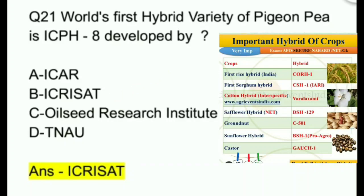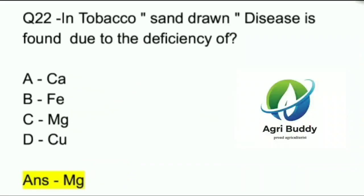Question 22. In tobacco, sandron disease is found due to deficiency of? A. Calcium. B. Iron. C. Magnesium. D. Copper. And the answer is Magnesium.